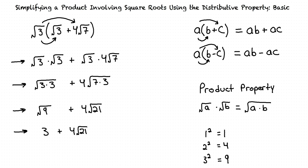And do you think the second term can be simplified any further? I don't think so, because if we factor 21, we don't have a perfect square and a whole number as our two factors. Correct, so our final answer is 3 plus 4 times the square root of 21.